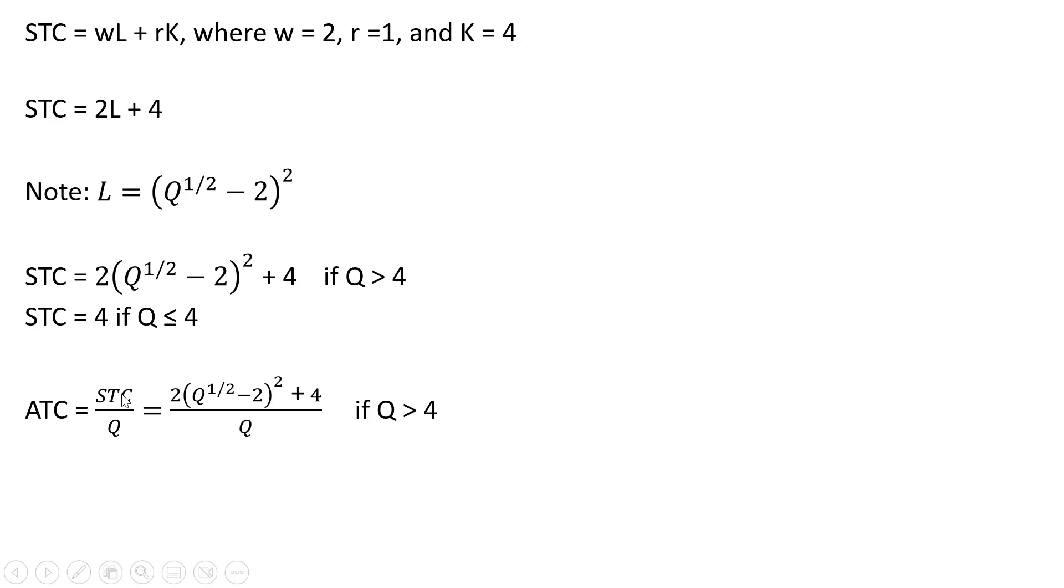In terms of average total cost, if Q is greater than 4, we're going to take this short run total cost equation and divide it through by Q to get average total cost. So doing that, we get this result. And then if Q is less than or equal to 4, the firm's average total cost is just going to be 4 divided by Q, the short run total cost divided by quantity.